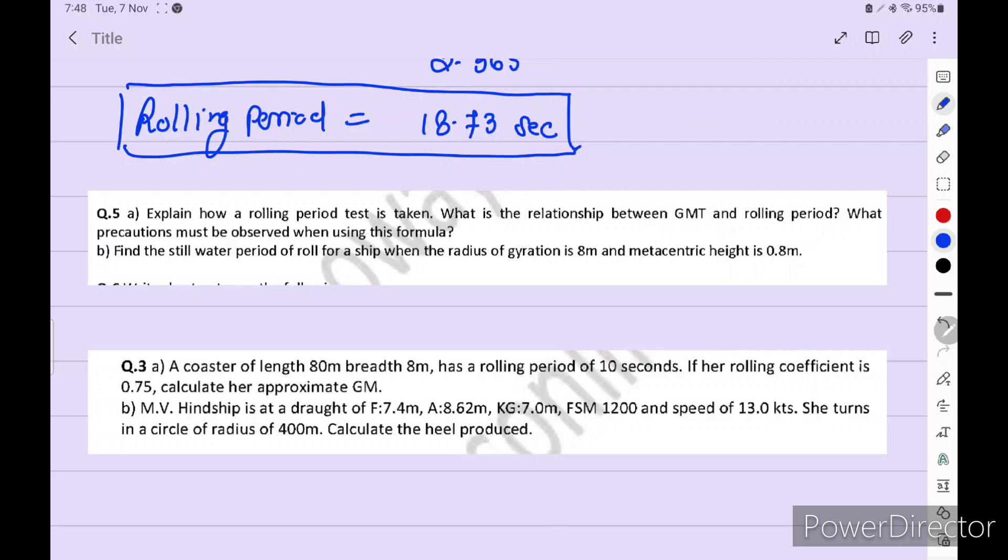You can see this also in past paper questions. Find question number 5B: find the still period of roll for the ship with radius of gyration 8 meters and metacentric height 0.8 meters. Similar type, only the value changes. And here is a different one: a coaster of length 80 meters, breath 8 meters has a rolling period of 10 seconds. If rolling coefficient is 0.75, calculate the approximate GM. Here, if this type of numerical comes, there is a different formula.